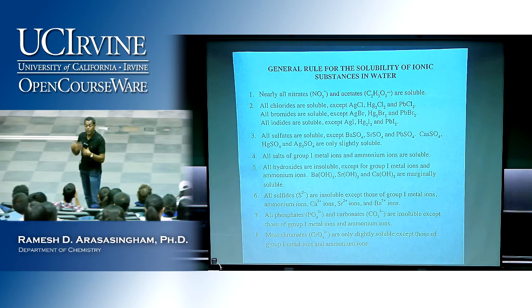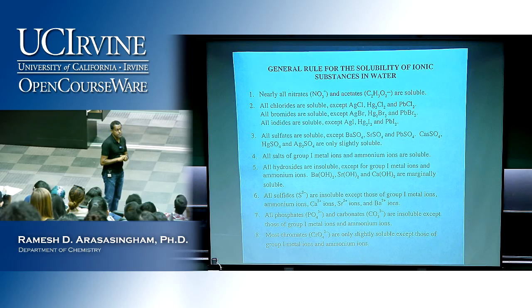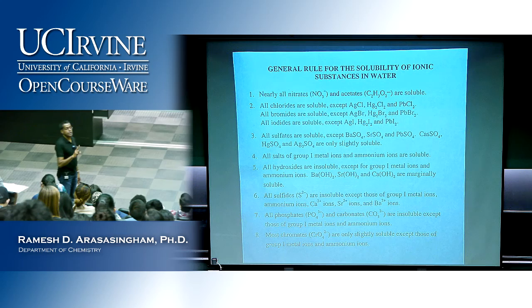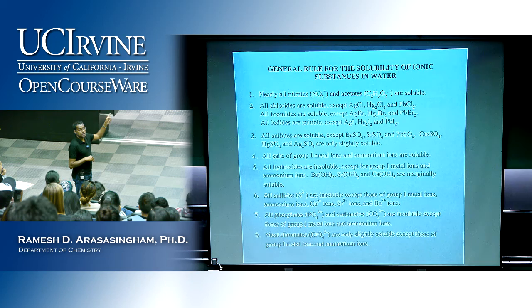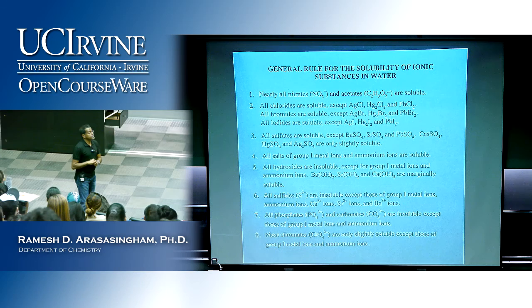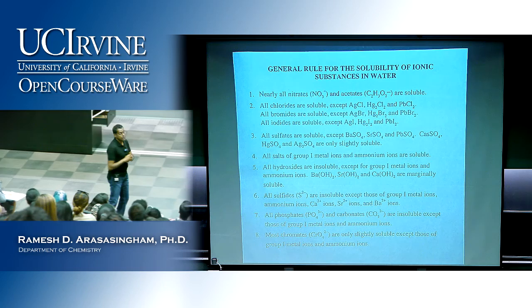The first rule is that all nitrates and acetates are soluble. So if the anion is a nitrate or acetate, like sodium acetate or potassium acetate, these will dissolve completely. Acetate can be written as CH₃CO₂⁻ — it's the conjugate base of the weak acid acetic acid. The second rule deals with chlorides, bromides, and iodides: all chlorides are soluble except when the cation is silver, mercury, or lead. The same rule applies for bromides and iodides.